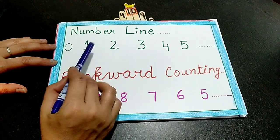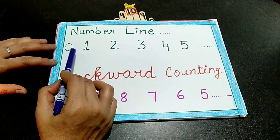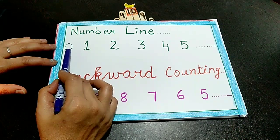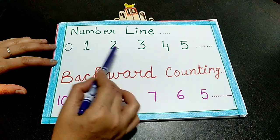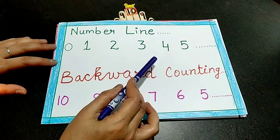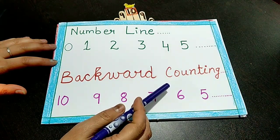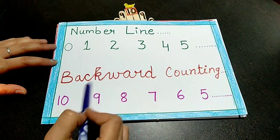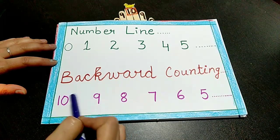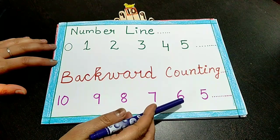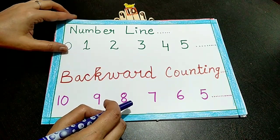This is the number line. In the number line, the numbers are arranged from the smallest to the greatest, that is in Ascending Order. But in the Backward Counting, the numbers are arranged from the greatest to the smallest, that is in Descending Order.